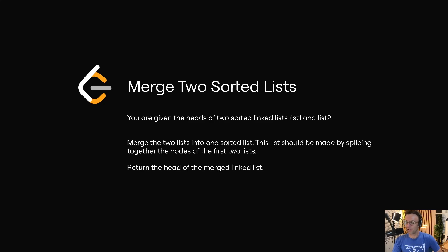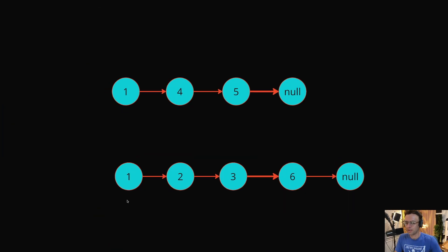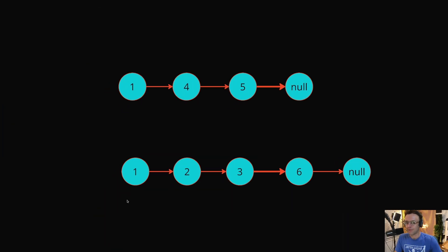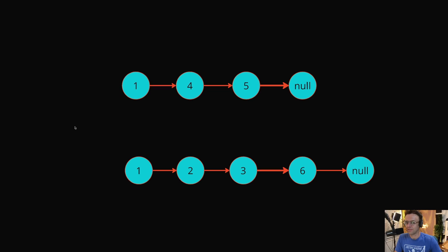In this video we're going to be tackling the LeetCode question 'Merge Two Sorted Lists.' This question is very common amongst companies. Companies love the two linked list style of question, but how exactly are we going to merge these two linked lists?